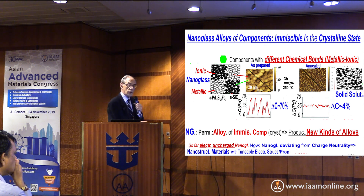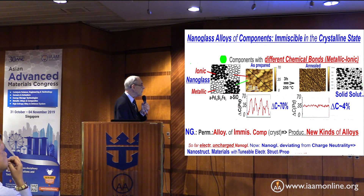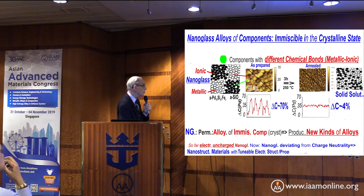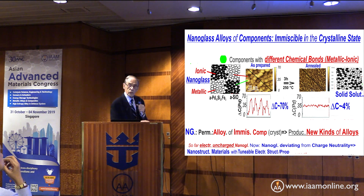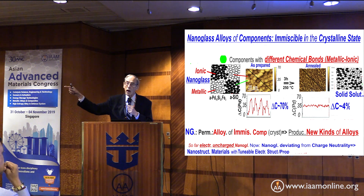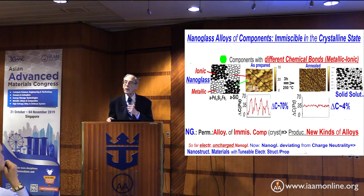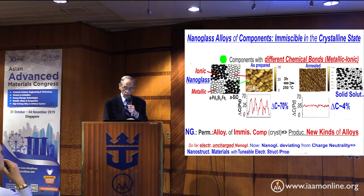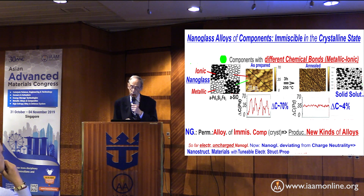The big surprise came when we looked at this nanoglass at about 250 degrees centigrade. We see that all the atoms interdiffuse, and we get a solid solution of palladium, silicon, iron, and oxygen — a solid-state mixture of an oxide with a metal. That means you can alloy a window glass with a piece of iron, something which you could never do in the crystalline state. This gives us a material we couldn't produce before — a new kind of alloy in the glassy state — and this is a fundamental progress.